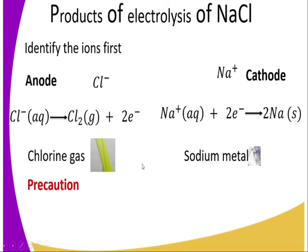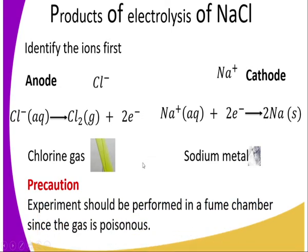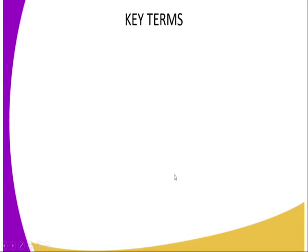So what precautions should we take when performing this experiment? Chlorine gas is poisonous, and therefore the experiment should be performed in a fume chamber, since the gas is poisonous.